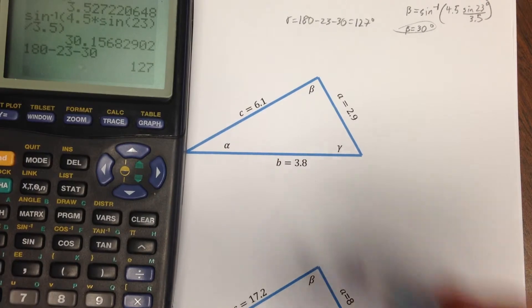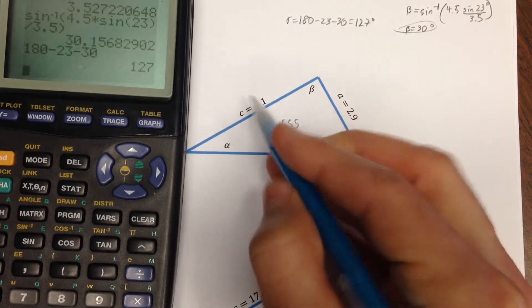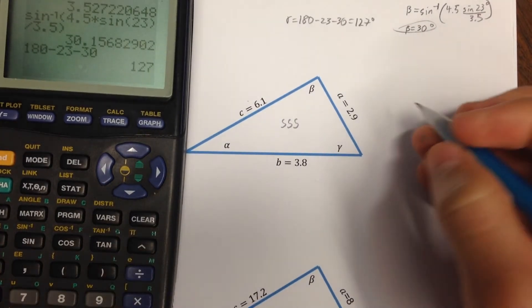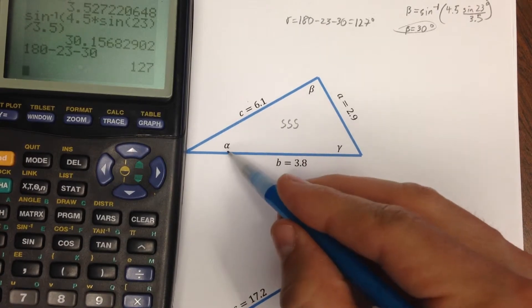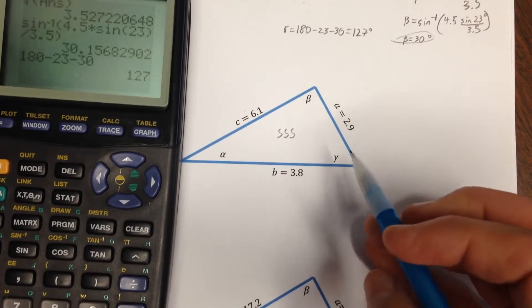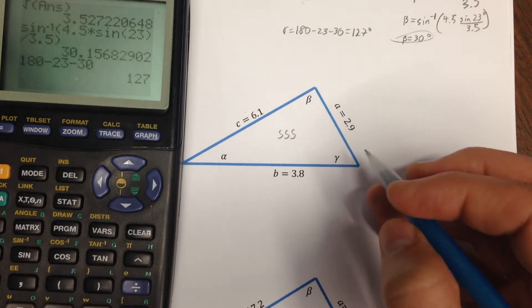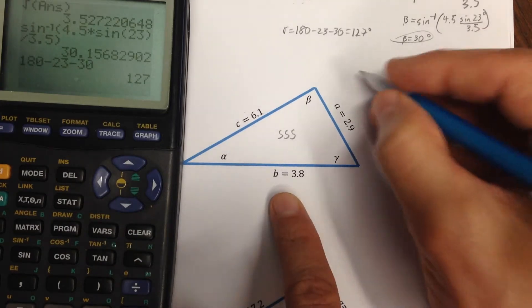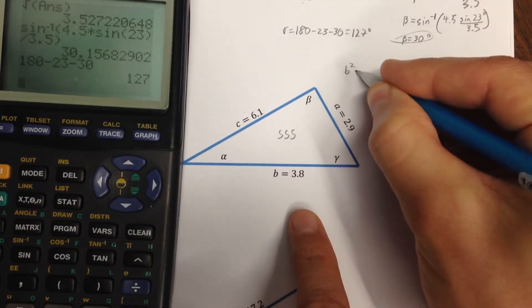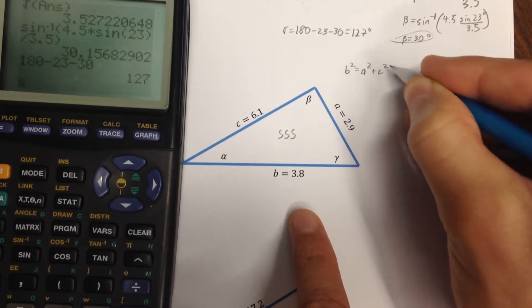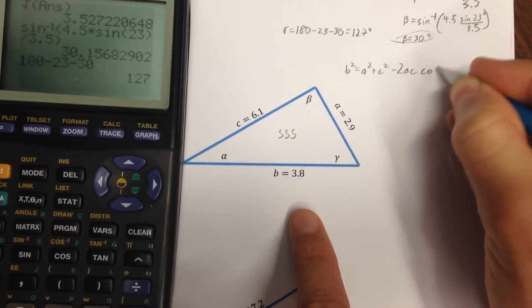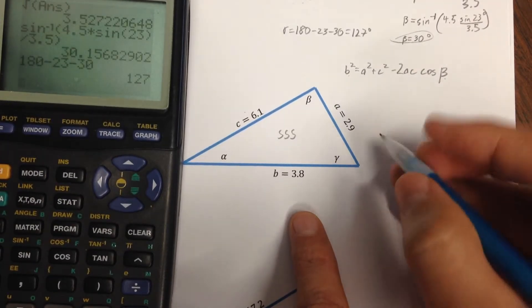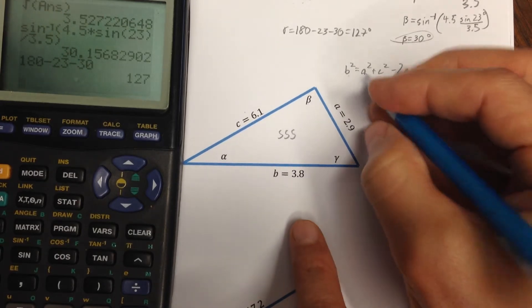The next problem, notice that what I have is I have side, side, side. I have all the sides, I don't have any of the angles. So, I'm going to use law of cosines to get one of the angles. Now you could use exactly the form of law of cosines that I used earlier. Just to show you a different form, I'll go ahead and use the form that starts with b squared. So, b squared equals a squared plus c squared minus 2ac cosine of beta. The important thing is that this angle be opposite this side. So, here I'll get beta to start with.